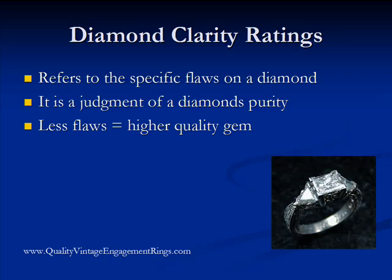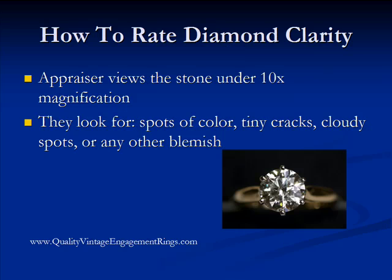Diamond clarity ratings refer specifically to the flaws on a diamond, both internally and on the outside. Basically, a diamond clarity rating is a judgment of the diamond's purity. If a diamond has fewer flaws, it's more pure, meaning it's a higher quality gem, which also means it's going to be more expensive. If you're looking to save money, you might consider getting a diamond that has a few small flaws.